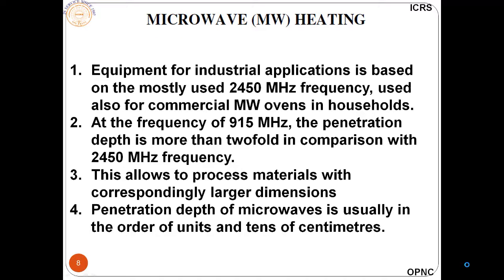In industrial applications, the frequency used is 2450 MHz (2.45 GHz). Another frequency used is 915 MHz. Where larger penetration is needed, we use 915 MHz; where smaller penetration suffices for heating, we use 2.45 GHz. This allows processing materials with correspondingly larger dimensions. Penetration depth of microwaves is usually on the order of tens of centimeters and even more, depending on the material.